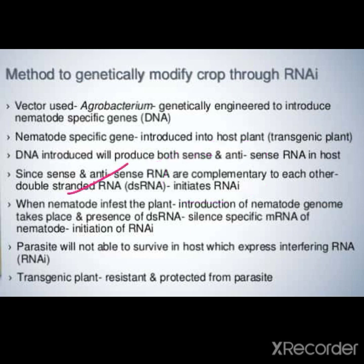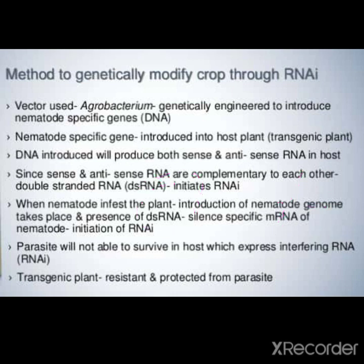I dha jodho bhi koi nematode ake plant noo infect karo ga, nematode specific gene ha, ee plant de andar jaoga, ee zakke double-stranded RNA ha, ee oada andar jaake mRNA di silencing kar dho ga. So di mRNA silent kar dho ga, oada the amaran process will not survive and transgenic plant will be resistant to that parasite.